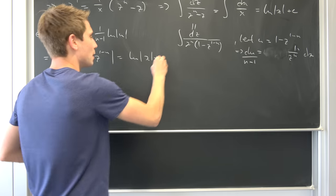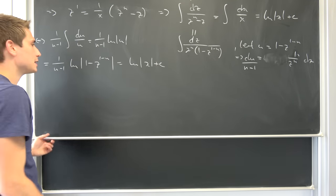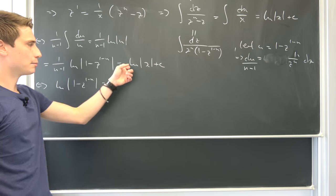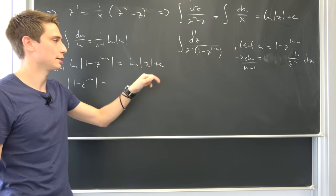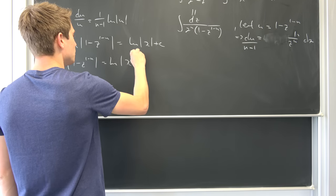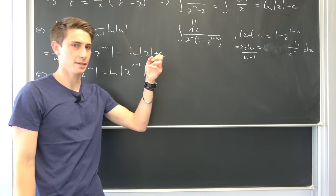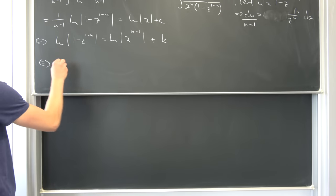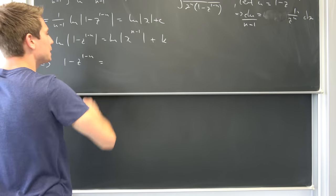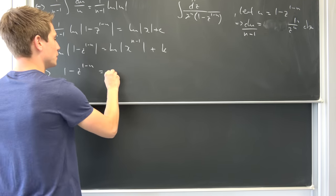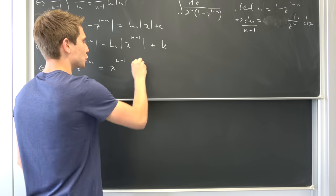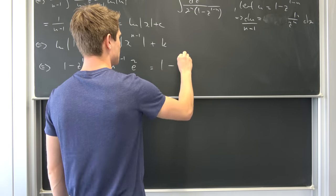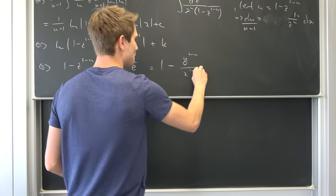Now we multiply both sides by (n minus 1), so we get the natural log of |1 minus z to the (1 minus n) power| equal to (n minus 1) times the natural log of x plus a constant k, which we can write as the natural log of x to the (n minus 1) power plus k. Applying the exponential function to both sides, 1 minus z to the (1 minus n) power equals x to the (n minus 1) power times some constant. Recalling that z equals y over x, z to the (1 minus n) power is y to the (1 minus n) power over x to the (1 minus n) power.